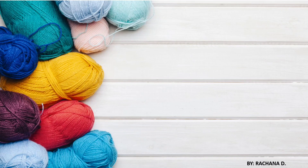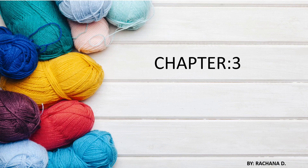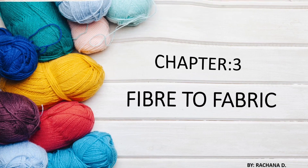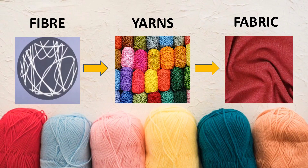Hello everyone, today we are going to study the third chapter of science, which is named Fiber to Fabric. Let us take a look at the chapter. Fabric is made step by step: first there is fiber, then from fiber we make yarns, and from yarns we make fabric.